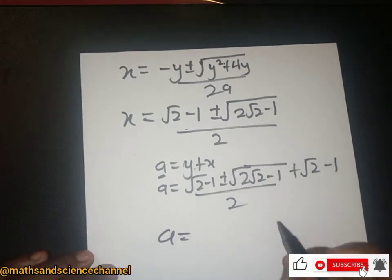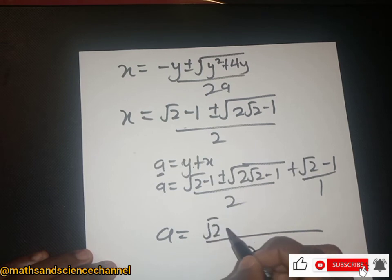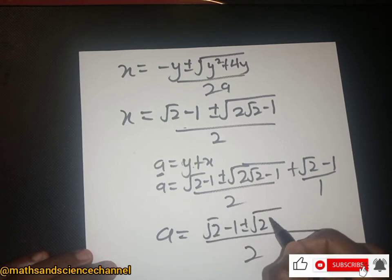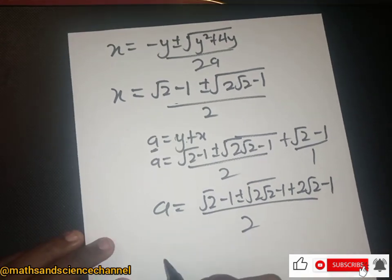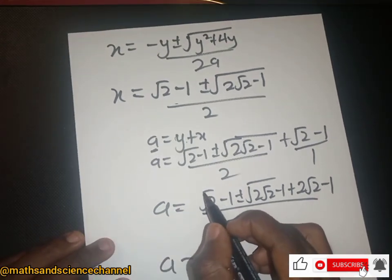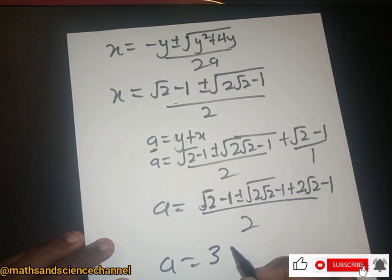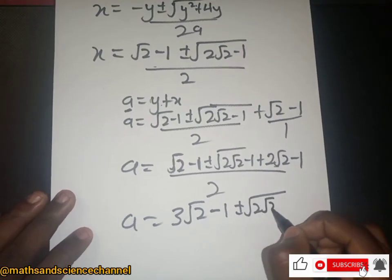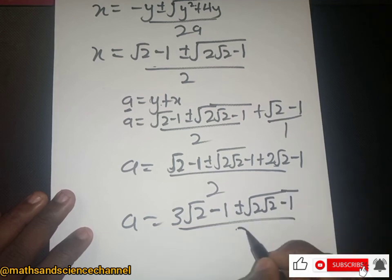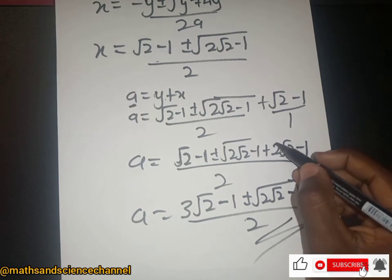Expanding over 1, we have root 2 minus 1 plus or minus (2·root 2 minus 1), plus 2·root 2 minus 1. So we have root 2 minus 1 and that gives 3·root 2 minus 1, plus or minus root 2, with the square root of (3 minus 1) divided by 2. That is the value of a.